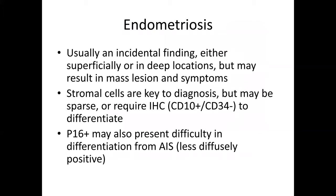Endometriosis can also present in the cervix. It's usually incidental, but may be both superficial or deep, occasionally resulting in a mass-like lesion and a differential consideration of malignancy. Recognizing the stromal cells is very helpful to the diagnosis, but those may be sparse or only evident on immunohistochemistry such as CD10. P16 also can be positive in some circumstances, usually in the more splotchy pattern rather than the diffuse, blocky positivity of adenocarcinoma in situ. This is also a not infrequent finding following prior surgical procedures — curettages, cone biopsies — which can result in implantation of endometrial tissue in the cervix.